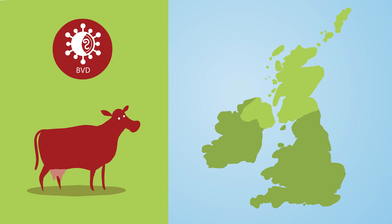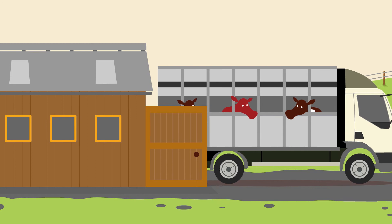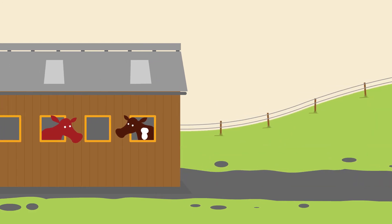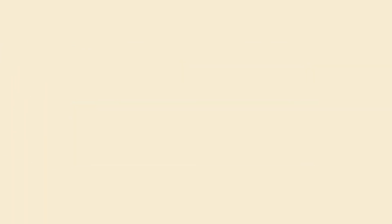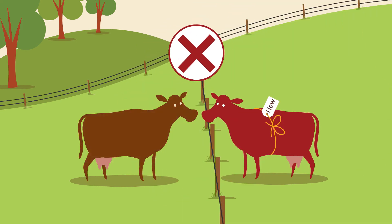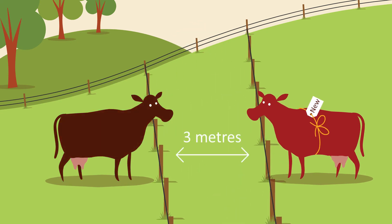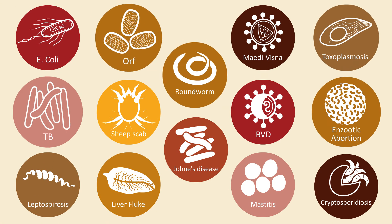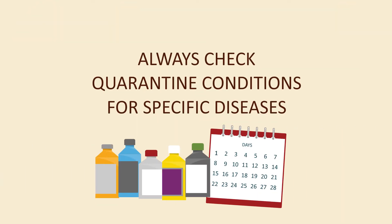The BVD status of cattle should be checked prior to purchase. In countries such as Scotland, where eradication schemes are compulsory, the BVD status of all breeding cattle must be known. Irrespective of official BVD status, all bought-in or returning animals should always be quarantined in isolation in a separate building until test results are known. Nose-to-nose contact over fences to neighbouring farms should always be minimised, and double fencing with a gap of at least three metres is recommended. Remember, different diseases will have different quarantine conditions and time periods, so always check the requirements for each disease.